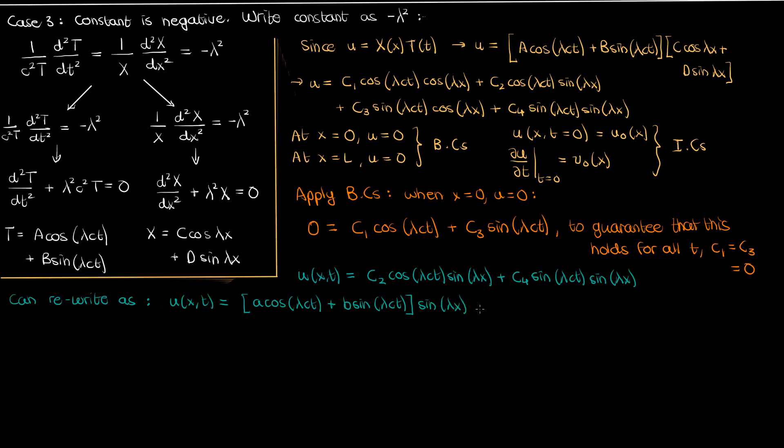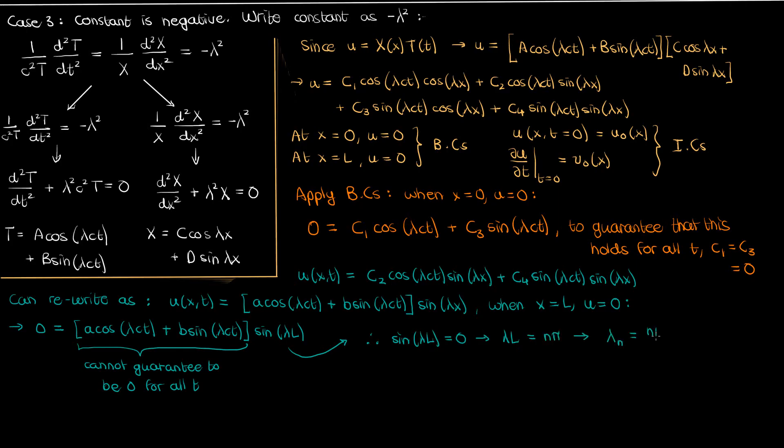Now let's apply our second boundary condition. So when x is l u is also 0. Once again we cannot guarantee the cosines and sines in time to always add to 0 for all values of time so that means the only possible option is that sine of lambda l is 0. Now when is sine of something 0? Well from basic trigonometry you know that sine is 0 whenever we're taking the sine of an integer multiple of pi because sine pi is 0 sine 2 pi is 0 and so on. It follows then that lambda l equals n times pi where n is a positive integer.